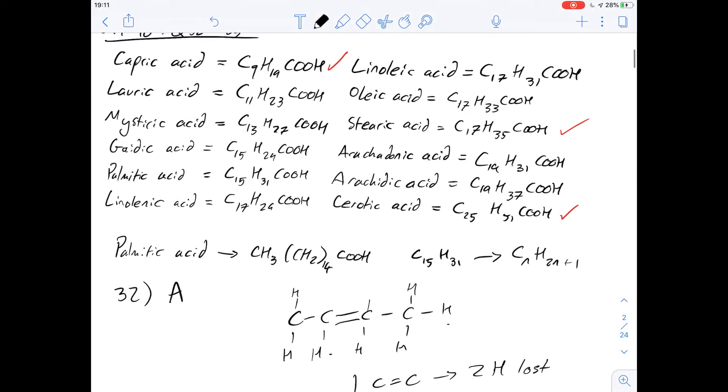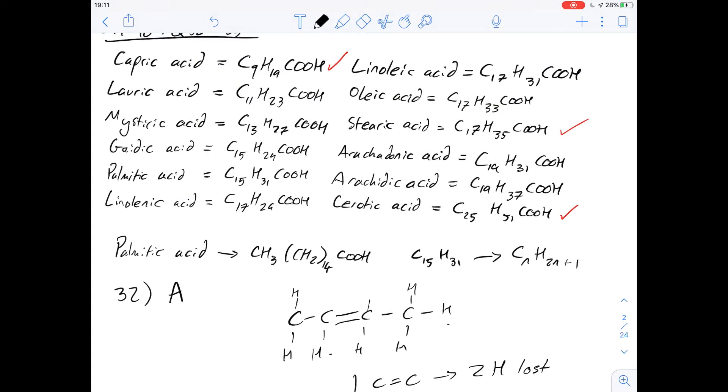So if we can compare some of these acids to what they would be if they were saturated, we can work out the number of double bonds that are present because of the number of hydrogen atoms that have gone missing.